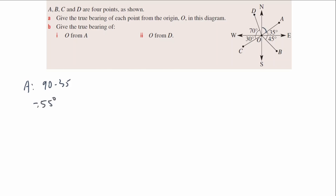90 minus 35 gives me an angle of 55 degrees. Because it's a true bearing, I need to write 55 degrees T — T for true. Just make sure you put that in your answers. For point B, I'm trying to find the angle from that north line to B. North to east is going to be 90 degrees, so I can find that by doing 90 plus 45, which gives a value of 135 degrees T.